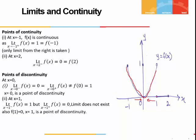Let's check the point x = 1. We can approach 1 from both sides. When we approach from the left, the function approaches 1, so the limit from the left is 1. When we approach from the right, the function is approaching 0, and the value of the function is also 0. Since the left and right limits are not equal, x = 1 is a point of discontinuity.